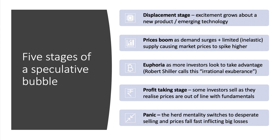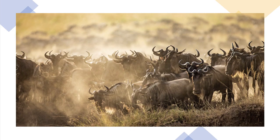The third stage, often towards the peak of the boom, is the euphoric stage: more investors pile into the market to take advantage of rising prices, and expectations are positive. Professor Robert Shiller, the Nobel Prize-winning economist, calls this the irrational exuberance of investors. Stage four: some people start to sell because they realize prices are way out of line with fundamentals; others take short positions because they think the market is overleveraged. Then finally, stage five — the panic stage: prices are falling, the herd mentality of investors switches from optimism to pessimism, people start desperately trying to sell, and in a buyer's market when everybody's trying to sell, prices fall fast and that can inflict a big loss.